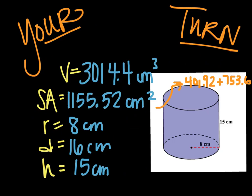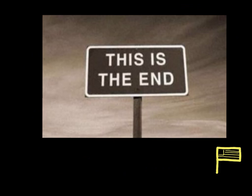Here are your answers. For the surface area, I've put in orange what the two steps are that are added together to find your total answer. If you showed your work, you should be able to see where you went wrong if you did. If you have questions, make sure you bring them to class — write them down in your notes so you don't forget to ask. This is the end; you need to copy the flag down in the corner and put it next to the word 'summary' on your notes. Thanks for watching.